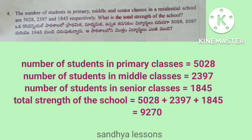Solution: Number of students in primary classes is 5,028. Number of students in middle classes is 2,397. Number of students in senior classes is 1,845. Total strength of the school is 5,028 plus 2,397 plus 1,845, that is equals to 9,270.